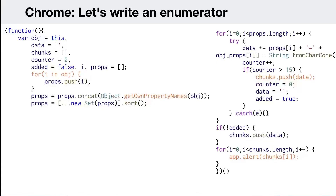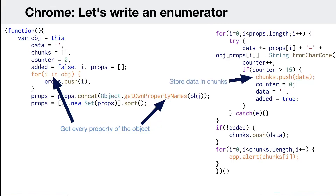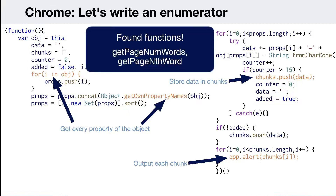I wrote an enumerator to enumerate every object and get its properties. I did a for loop using getOwnPropertyNames to gather all properties. Because Chrome doesn't allow the console object, I had to output data in chunks using an alert box, adding various properties to chunks of data and outputting each chunk. I found some interesting functions: getPageNumWords and getPageNthWord — these sound really promising for stealing the contents of the PDF.